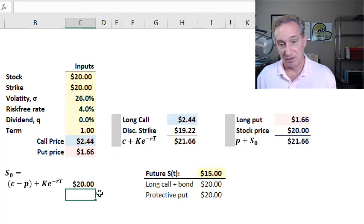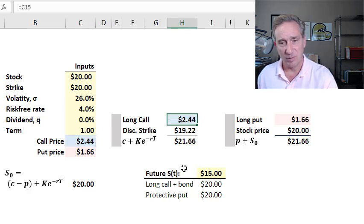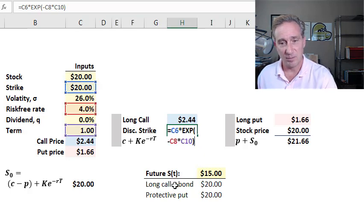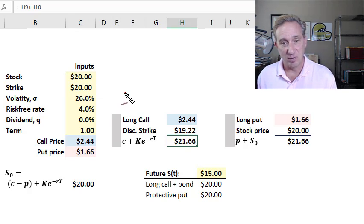I'll show you how I memorize it. I memorize it differently. The way I memorize it is left hand, right hand. On the left hand, I have call plus discounted cash. Here's our call plus the strike price discounted today. Call plus discounted cash. Our call price is $2.44, and our strike price of $20 discounted is $19.22, giving us $21.66.